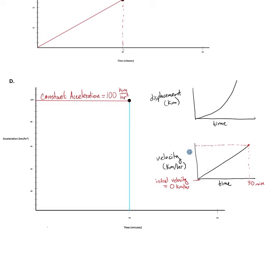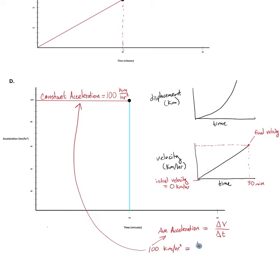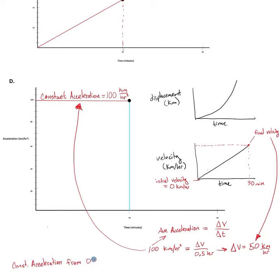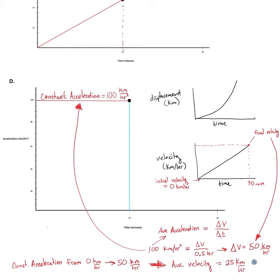Now that we have our constant acceleration, our initial velocity, and the time frame over which all of this is occurring, we're going to be able to figure out our final velocity, which will then enable us to determine the average velocity over this period and assess whether that is consistent with the scenario in the question stem. To calculate our final velocity, we're going to use the equation: average acceleration equals the change in velocity over the change in time. So we use our 100 kilometers per hour squared as our average acceleration, set that equal to delta v divided by our 0.5 hours, and we find an overall change in velocity of 50 kilometers per hour over this half hour. Since our initial velocity is 0 kilometers per hour, our final velocity is 50 kilometers per hour. So since we're accelerating from zero and end up at a final velocity of 50 kilometers per hour, there's no possible way our average velocity during that time frame could be 50 kilometers per hour, since that's the fastest we ever go. In fact, our average velocity during this time frame actually has to be 25 kilometers per hour, since that's the mean over the course of that time.